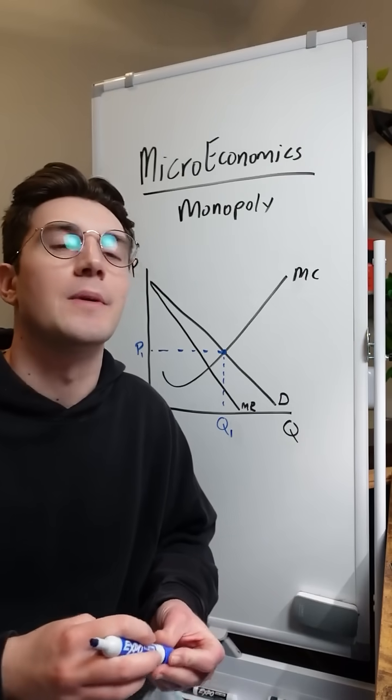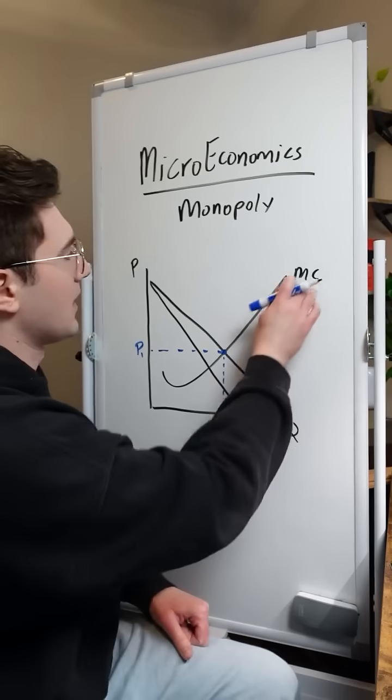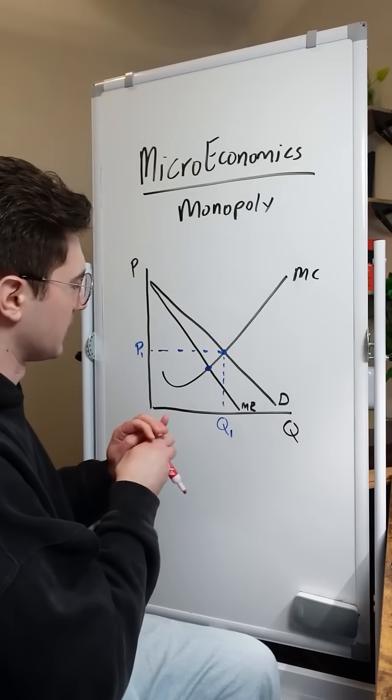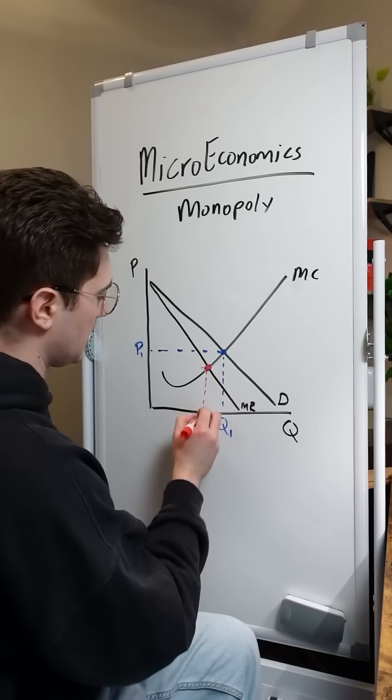But remember, all firms produce where MR equals MC. MR, MC, and that point occurs right here. Actually, we'll do red right here to distinguish, which corresponds to this quantity, we'll call that Q2.